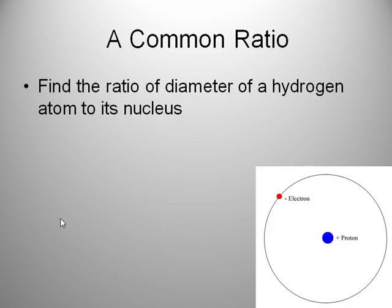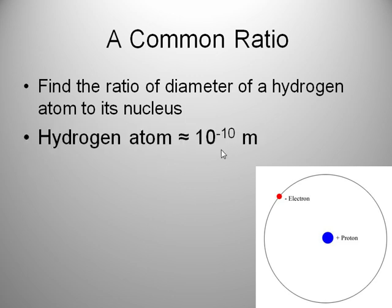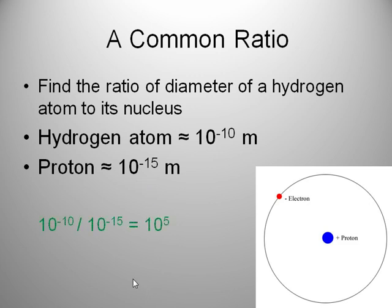Let's talk about a ratio. Here's a sample problem. If you were asked to find the ratio of the diameter of a hydrogen atom to its nucleus, what would that be? The atom is going to be bigger than the nucleus, so this should be some large number. The hydrogen atom is 10 to the minus 10th meters across approximately, and a proton is 10 to the minus 15th. If we take that ratio, we get 10 to the 5th.